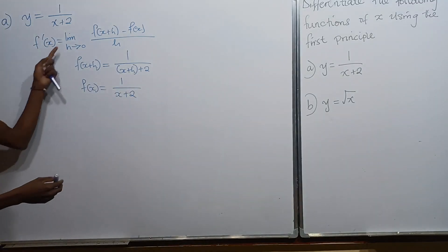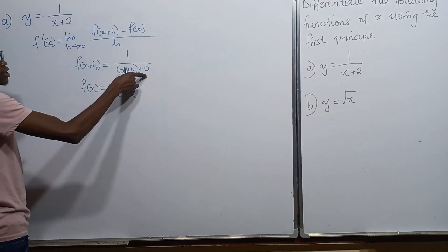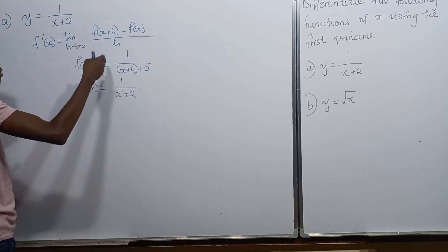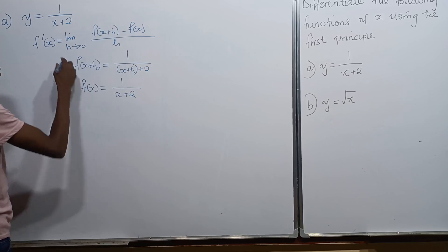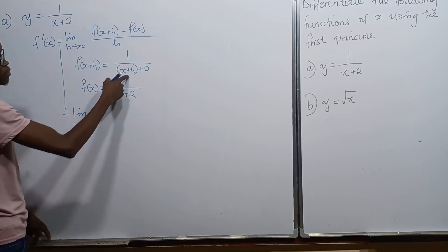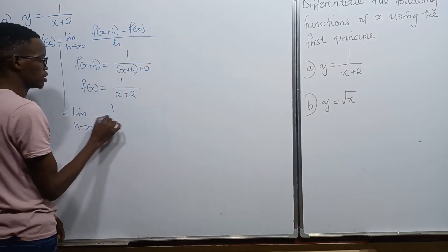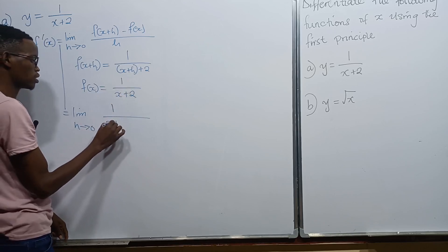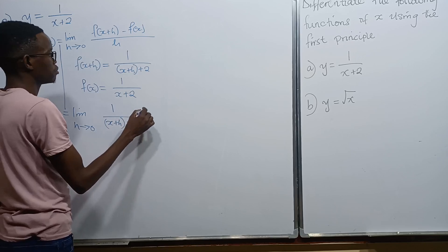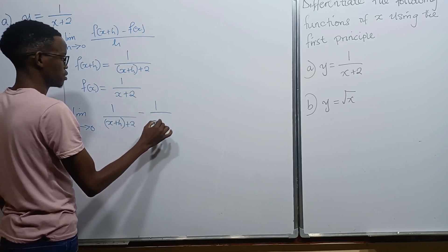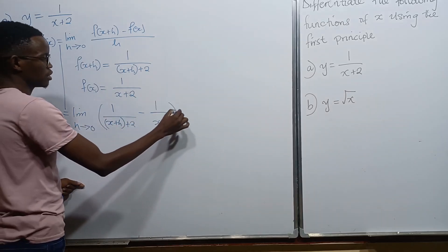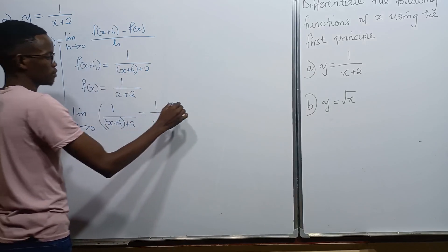Next, we take these expressions and put them into the formula. Where there's f of x plus h, we put 1 divided by x plus h plus 2, and where there's f of x, we put 1 over x plus 2. This whole thing is then divided by h.